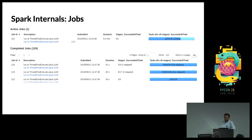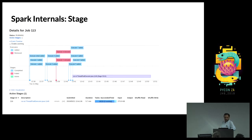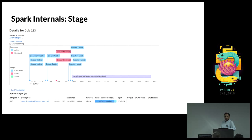In the Spark UI, you can see jobs, the stages within them, and how stages are allocated to executors. An executor is essentially one virtual node with a separate JVM — Spark spawns a separate JVM for each executor. You can also see the number of tasks per stage.